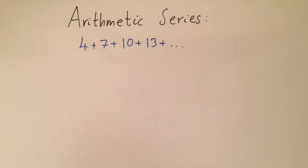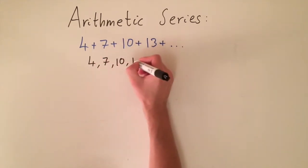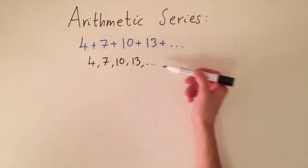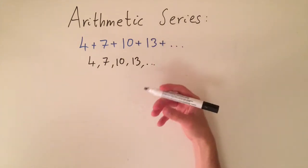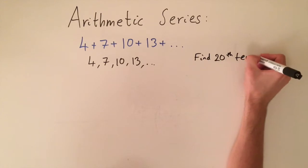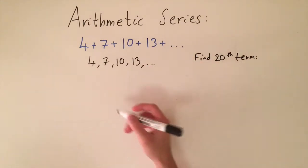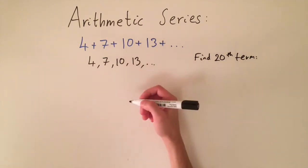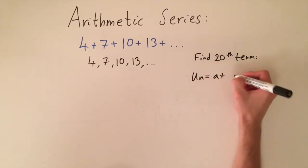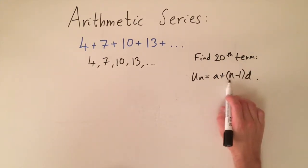If the series is finite we can work the sum out quite nicely, but if it's infinite it might be harder — we might not even be able to find it. Let's look at the corresponding sequence first: four, seven, ten, thirteen, etc. We can ask the same questions as for sequences, for example: what is the twentieth term? To find it, we plug n = 20 into the general formula for the nth term of an arithmetic series.